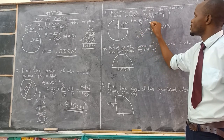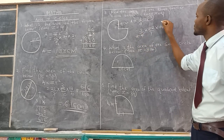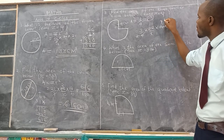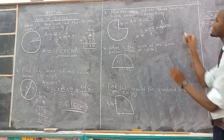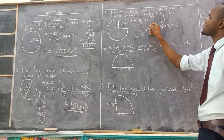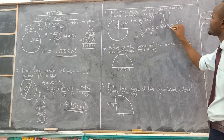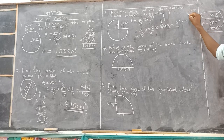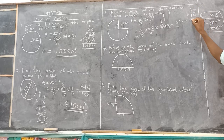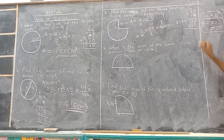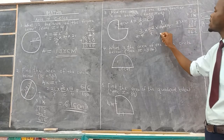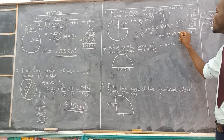So we have 3 over 4 times 22 over 7 times 14 times 14. Cancelling 14 by 2 gives 7, and 7 by 7 gives 1. Then 3 times 11 gives 33, and 33 times 14 equals 462. Our answer, the area, is 462 centimeters squared.